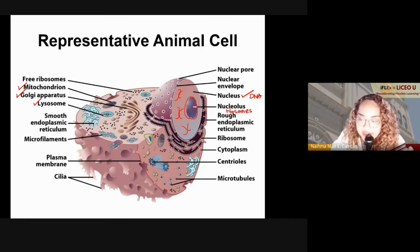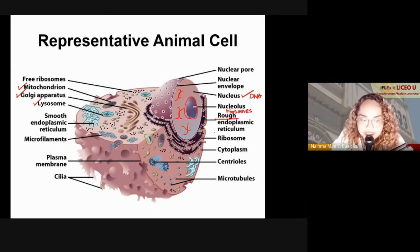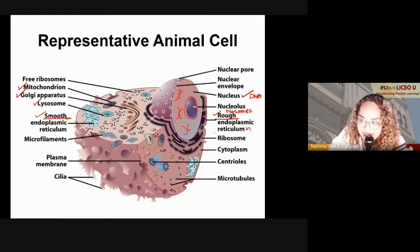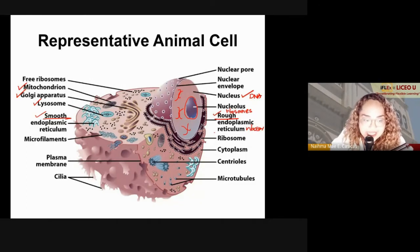Ribosomes are made in the nucleolus. The nucleus is in direct communication with your endoplasmic reticulum — both rough and smooth. The rough endoplasmic reticulum is called rough because it has ribosomes, giving it the ability to make proteins. The smooth endoplasmic reticulum does not have ribosomes; instead, the SER synthesizes carbohydrates or lipids.